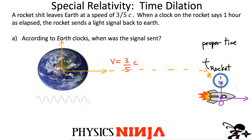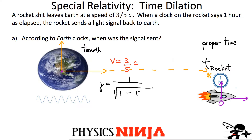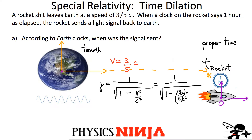So the time measured by Earth is going to be the dilated time. All that's left to do is calculate the gamma factor for this speed. That's always: γ = 1 / √(1 − v²/c²). For this problem it's 1 divided by √(1 − (3/5 · c / c)²). The c values cancel out and you need to square three-fifths.